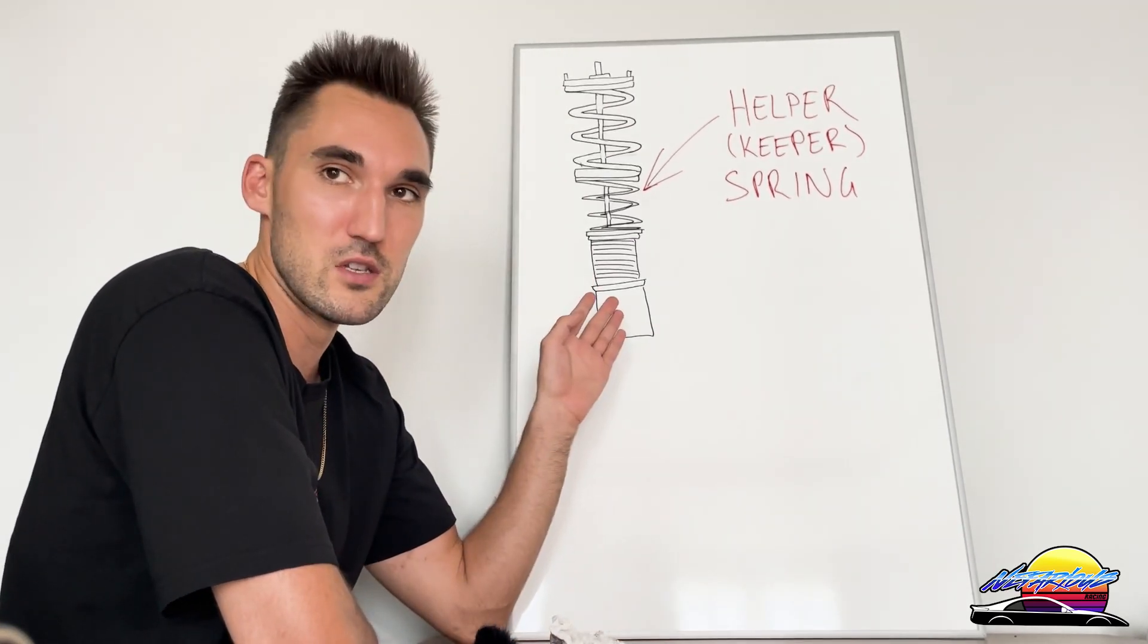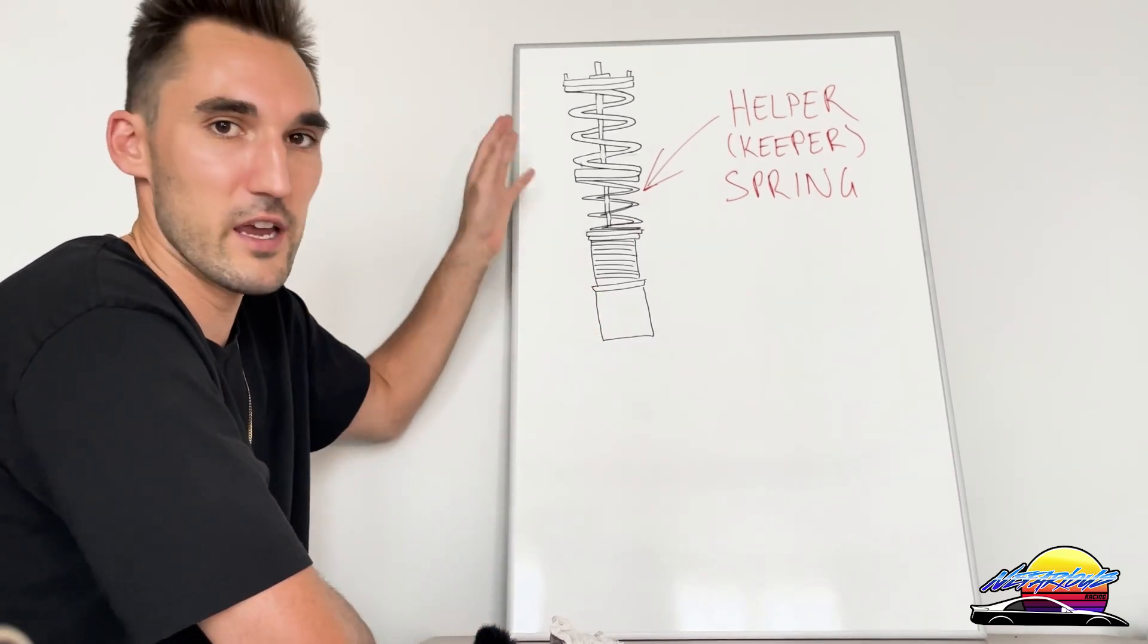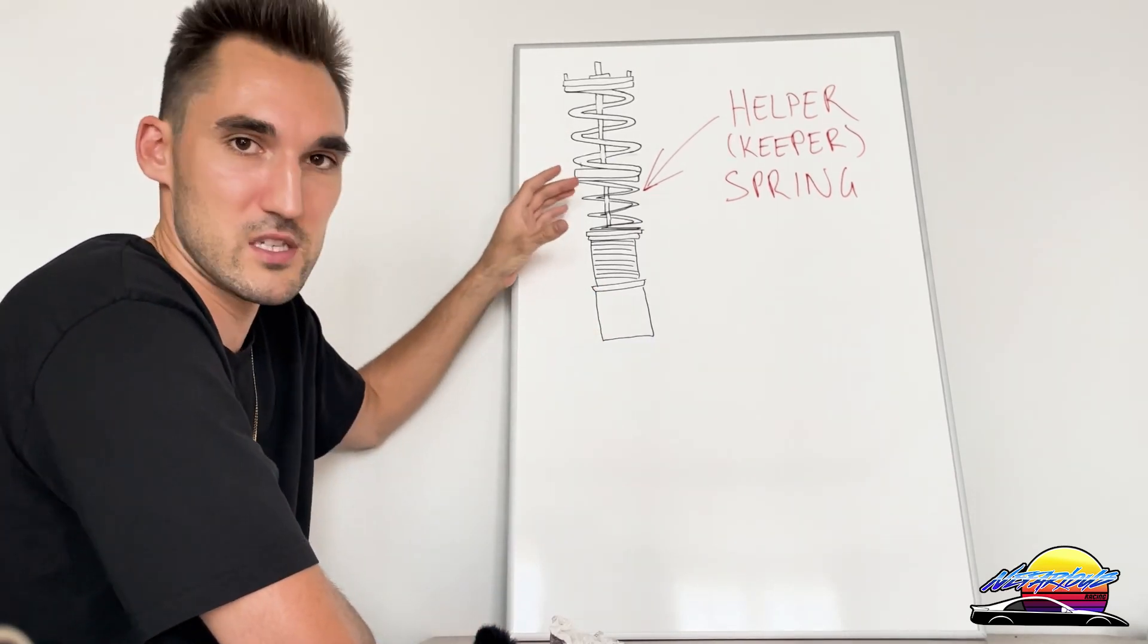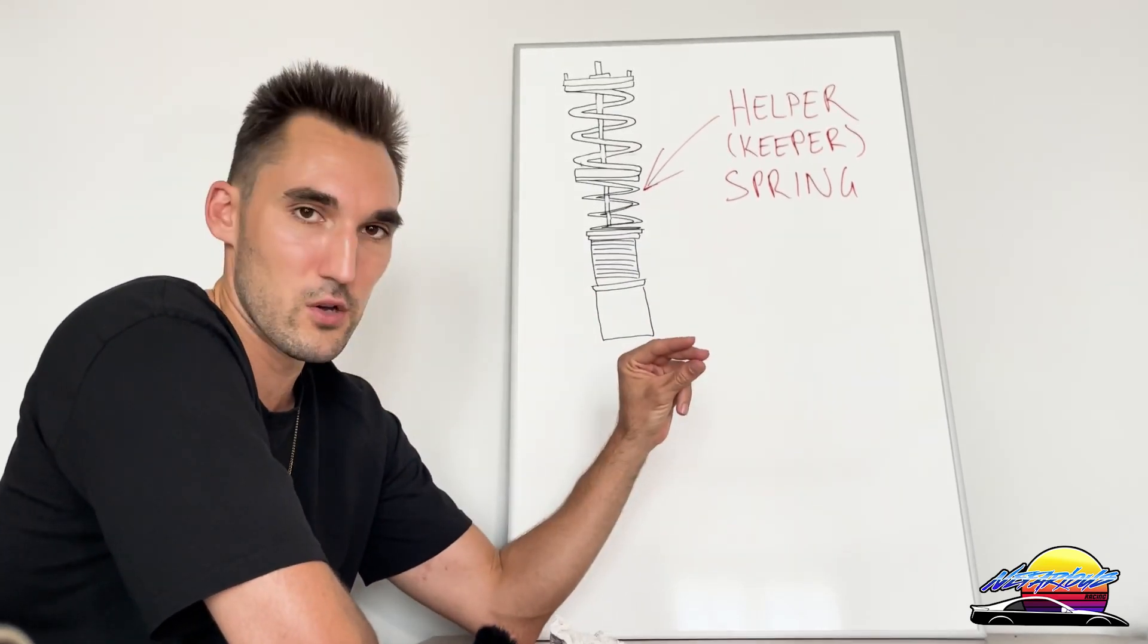That's basically it for helper springs. That's really all you need to know other than that they don't serve any purpose—they don't actually add to the spring rate or anything like that because they fully compress as soon as the weight of the car is on them. They're a very, very low-rate spring so that they're designed to just fully compress.